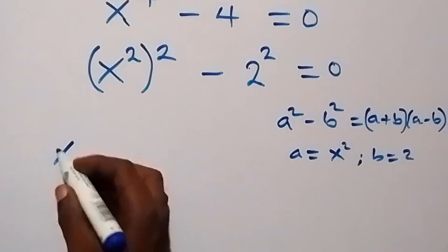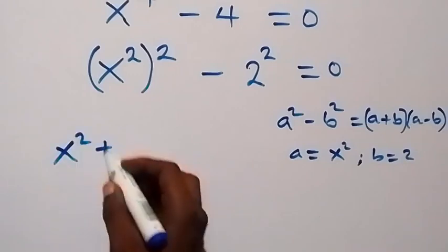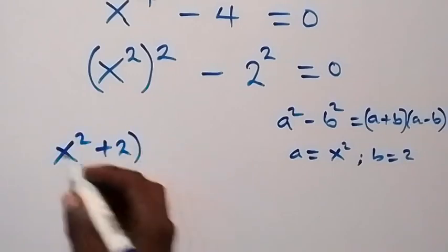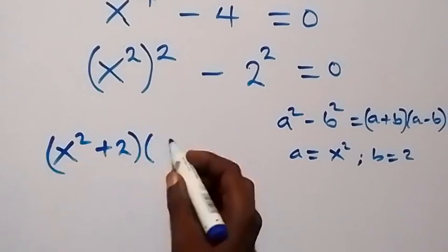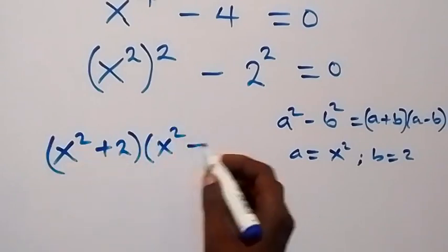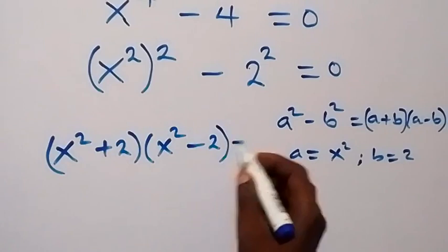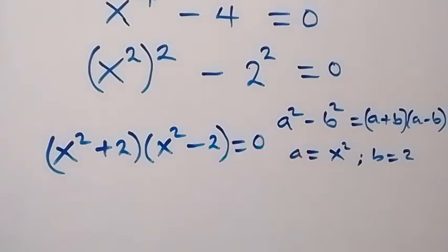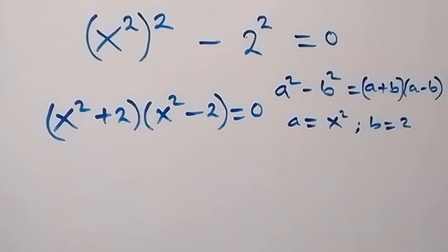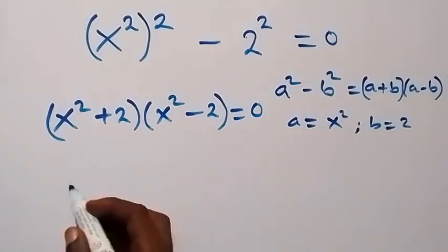Then when we apply this here, we now have x squared plus 2, then multiply by x squared minus 2. Then equals to 0 from here. Then what will help here now?